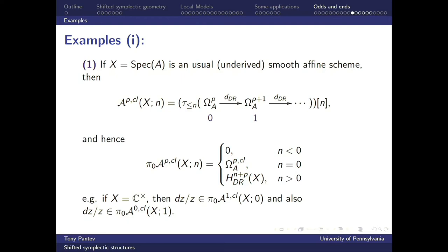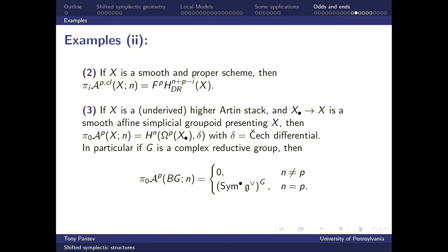For an ordinary underived affine scheme, the complex of closed n-shifted p-forms is just the intelligent truncation of the algebraic de Rham complex at degree n, with degrees shifted to become non-positive. The π₀ is zero if the shift is negative; if there is no shift, it's just the module of closed p-forms; if the shift is positive, it's the (n+p)-th de Rham cohomology of the affine scheme. You have to be careful: for the punctured affine line, you can think about the form dz/z as a closed degree-one zero-shifted form, or as a closed degree-zero one-shifted form — these are two very different creatures represented by the same de Rham expression.